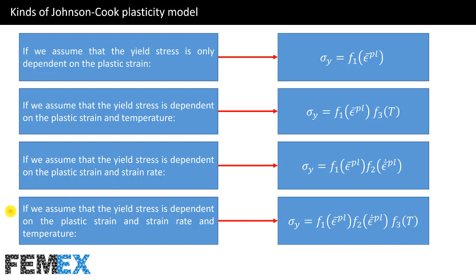And finally, if we assume that the yield stress is dependent on plastic strain, strain rate, and temperature, we have the most general form of the Johnson Cook Plasticity Model.